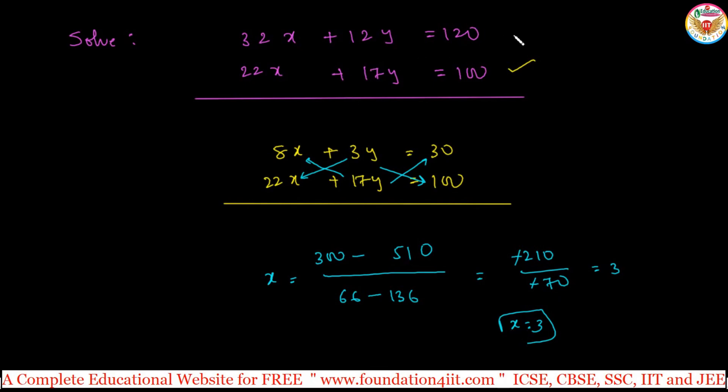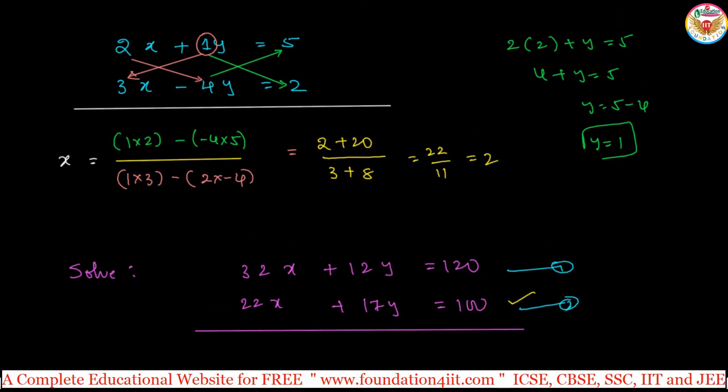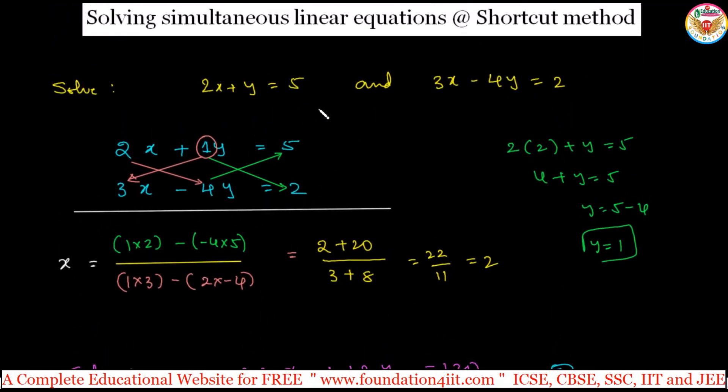x value you can replace in one of the equations, either 1 or 2, you will get value of y. This is to find out the calculating the value of x. For y also there is a cross way, but different. I am not showing this, just to find out the value of x you can use this method. Then taking the x value, substitute in one of the equations which has smaller numbers, then automatically you will get the value of y. This is a shortcut method to find the x value in simultaneous linear equations.